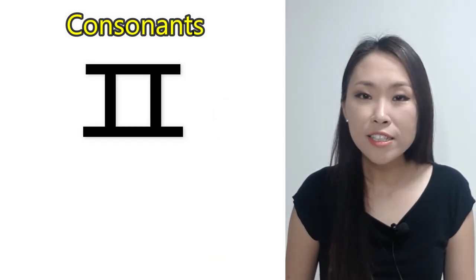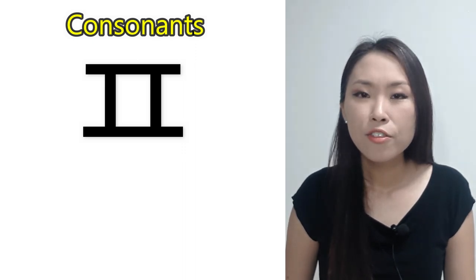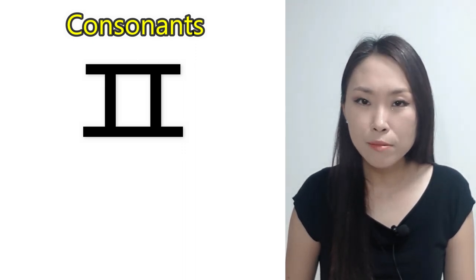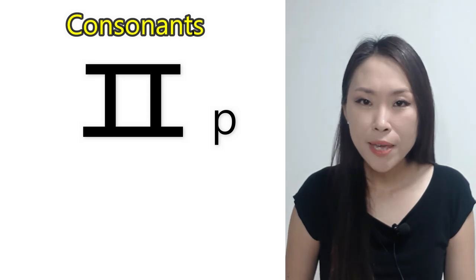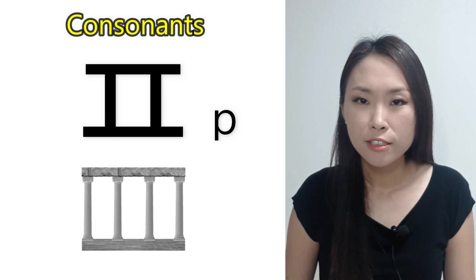The name of this consonant is 피읖. The romanized letter for 피읖 is P. 피읖 sounds like the letter P in the word pillars. P, P, P, P.